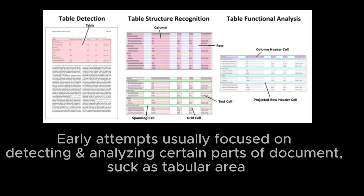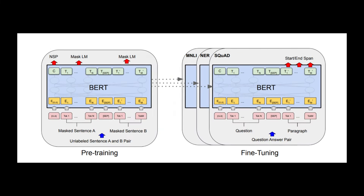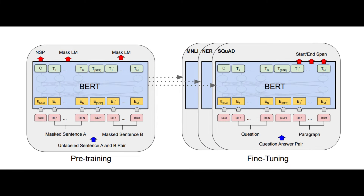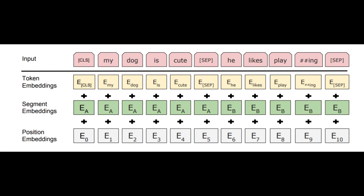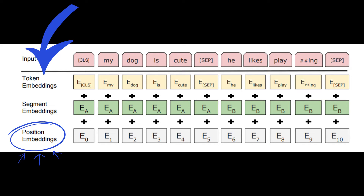Earlier attempts usually focused on detecting and analyzing certain parts of a document, such as tabular areas — for example, table transformers. LayoutLM was inspired by the BERT model, where the input text information is mainly represented by text embedding and position embedding.